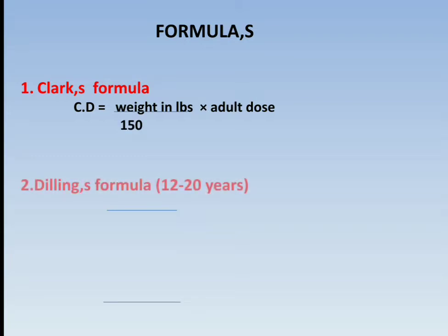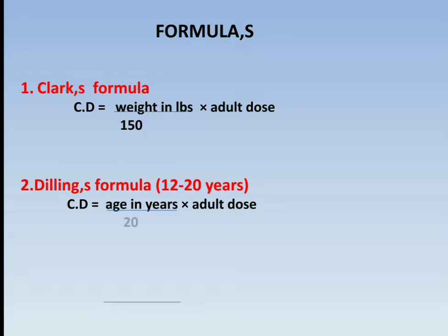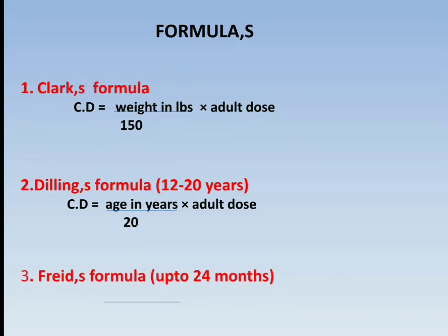Next is Dilling's formula, which is for 12 to 20 years. The formula is: Child dose = (Age in years × Adult dose) / 20. The third formula is Fried's formula, which is for up to 24 months. The formula is: Child dose = (Age in months × Adult dose) / 150.